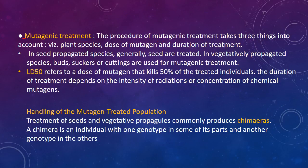Step three: mutagenic treatment, which takes into account the plant species, the dose of mutagen, and the duration of treatment. In seed-propagated species, seeds are generally treated; in vegetatively propagated species, buds, suckers, or cuttings are used. LD50 refers to the dose of mutagen that kills 50 percent of the treated individuals — it is essentially the lethal dose.